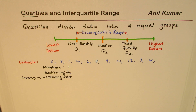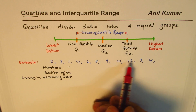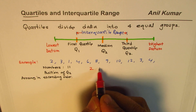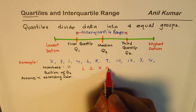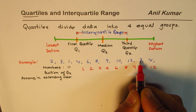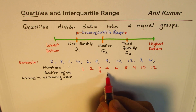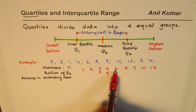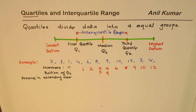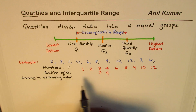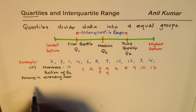So let's rewrite our numbers in ascending order. We have 11 positions: 1, 2, 3, 3, 4, 4, 6, 8, 9, 10, 12. Let's count: 1, 2, 3, 4, 5, 6, 7, 8, 9, 10, 11 — all 11 numbers in ascending order. Now, what is the position of the median, which is called the second quartile?